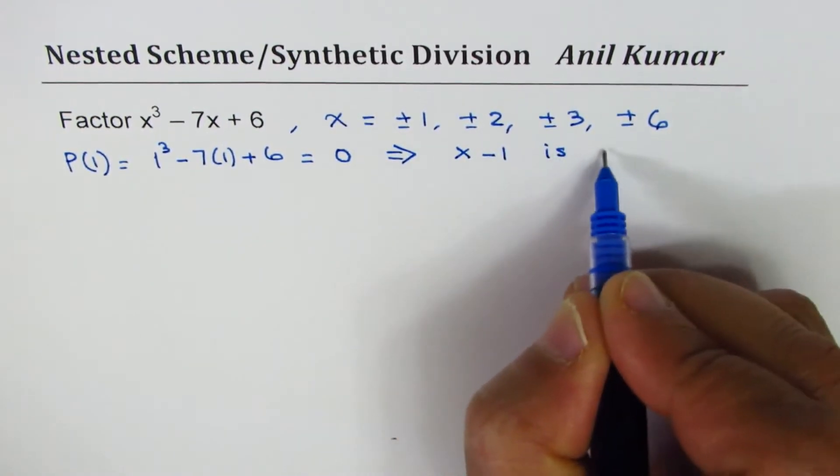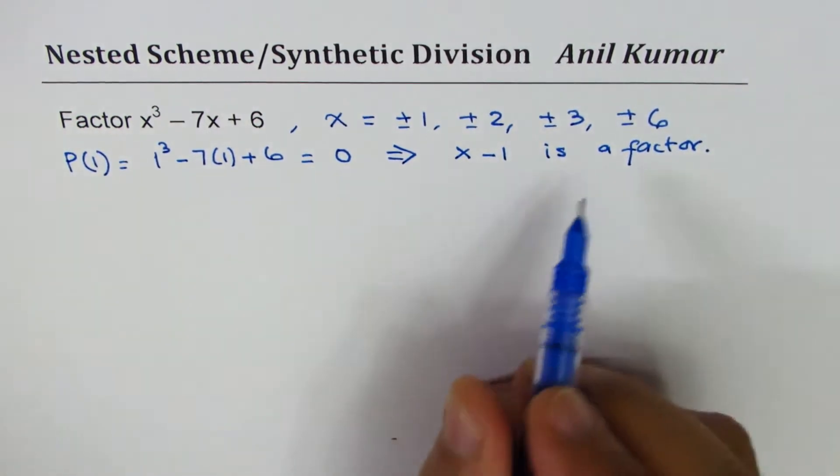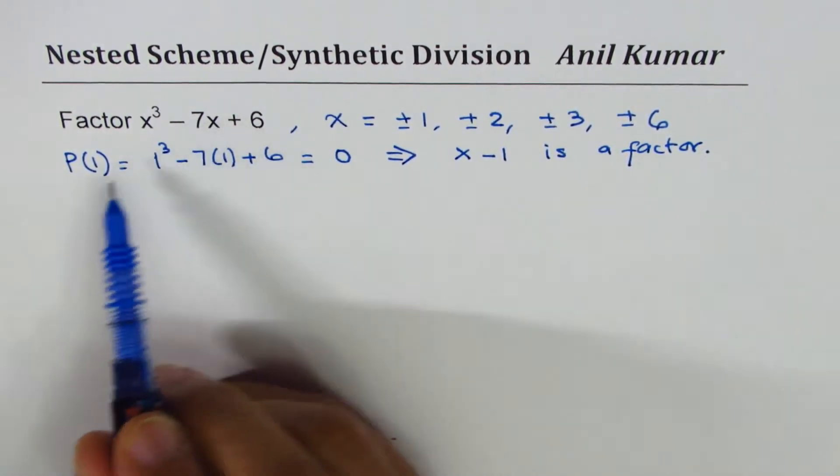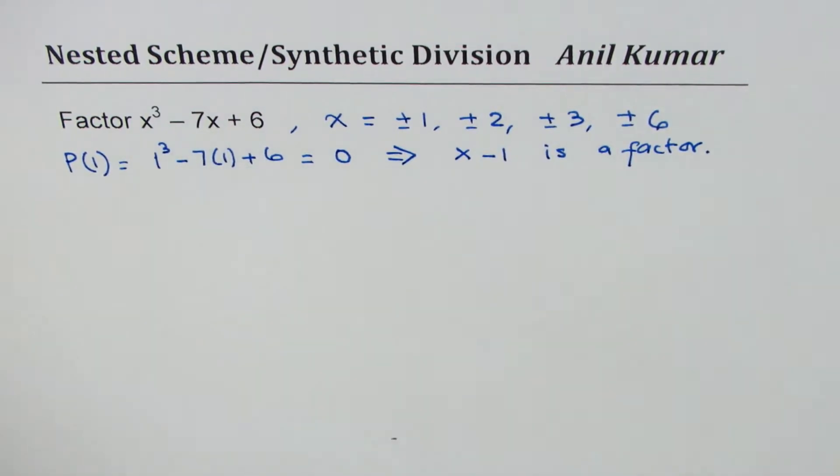We have got one factor. Factor means that if I divide by x minus 1, the given polynomial remainder will be 0 and we'll get the quotient which will be the other factor. So let's do the division.